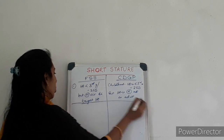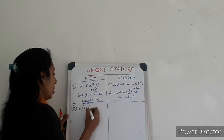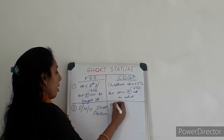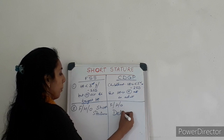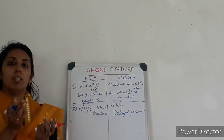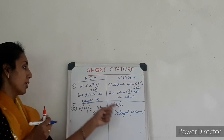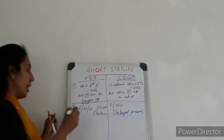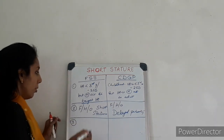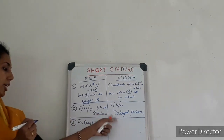In familial short stature, this is a major distinguishing point — we have to know the family history of short stature in the parents. Whereas in CDGP, you will get a family history of delayed puberty in the parents. The mother will give a history of delayed menarche, or the father will have a history of delayed puberty. So in CDGP there will be a family history of delayed puberty. In familial short stature, the child's puberty is normal, whereas in CDGP we have delayed puberty.